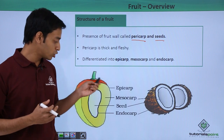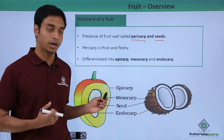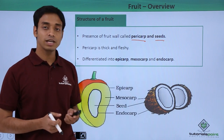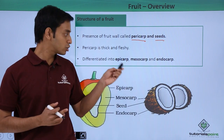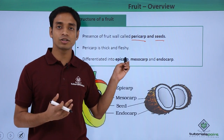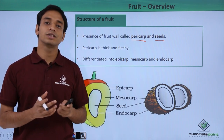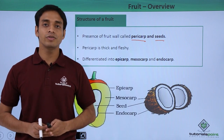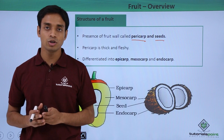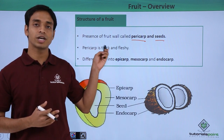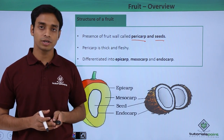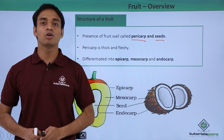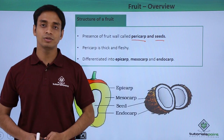In coconut, the mesocarp is mostly fibrous in nature. So based on the way the different layers of the pericarp develop, the type and texture of the fruit also differentiates. In this video we talked about what a typical fruit is, its structure, and the different layers — the epicarp, mesocarp, and endocarp.